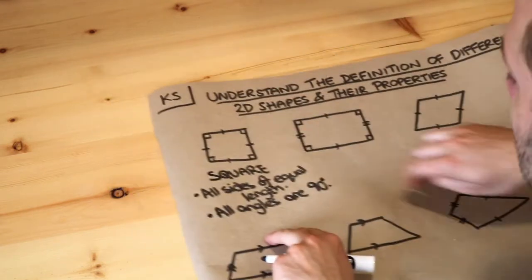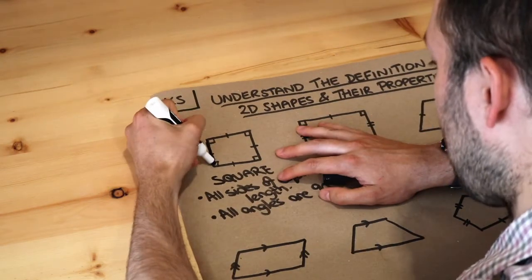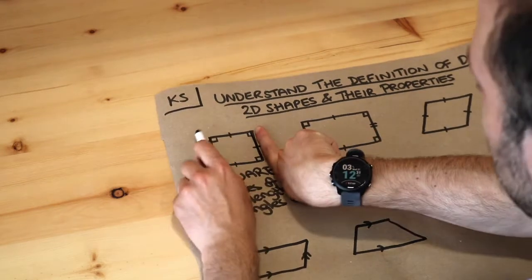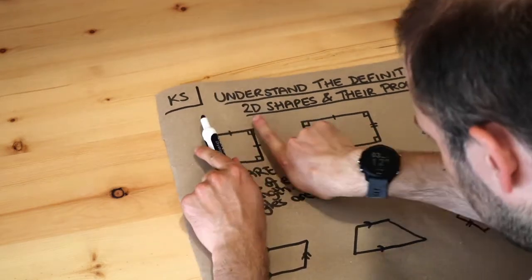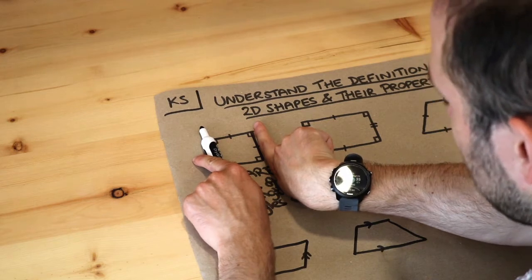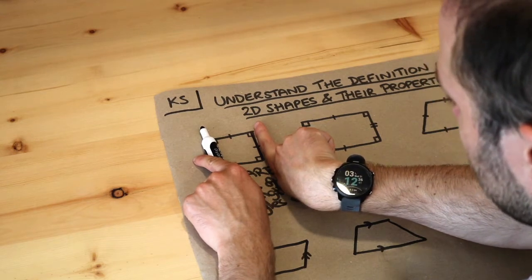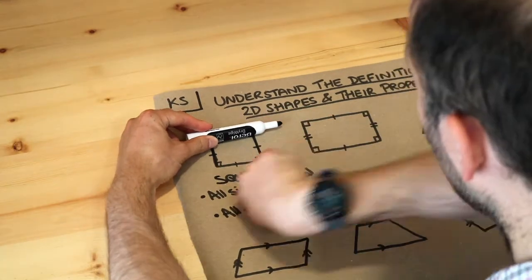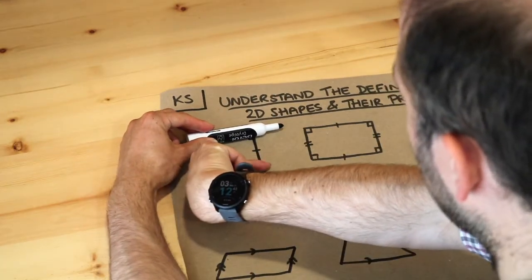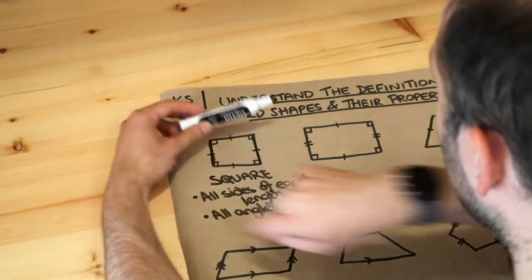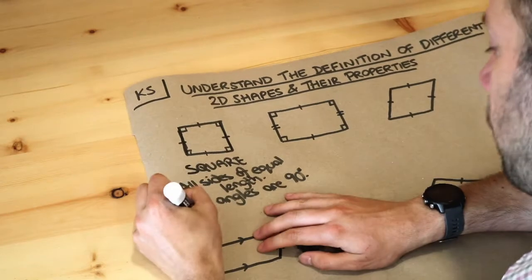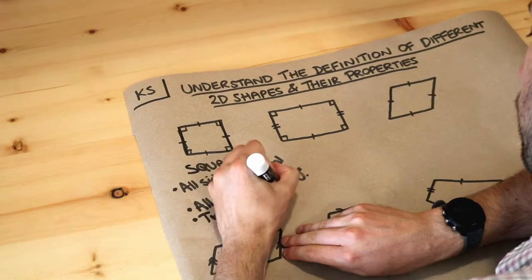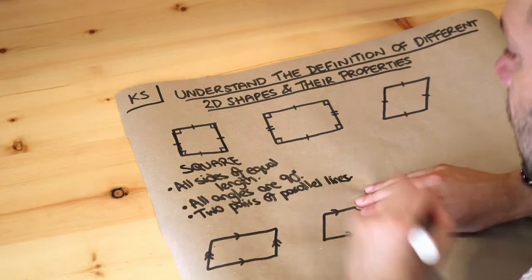Are there any other properties? Well, this length on the left and this length on the right — those lines are parallel. Parallel lines are just lines which go in the same direction, so this is a pair of parallel lines. And the top and the bottom are also lines that go in the same direction, so they would be parallel lines as well. So we would say it has two pairs of parallel lines.